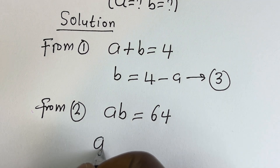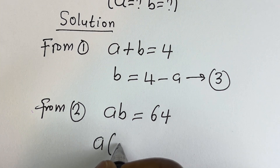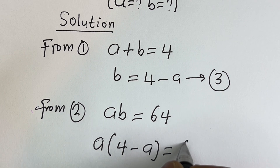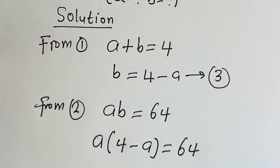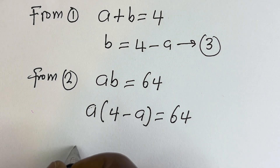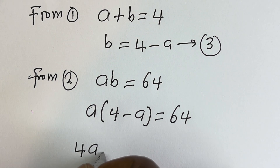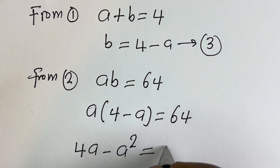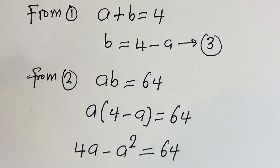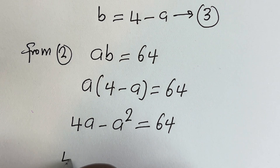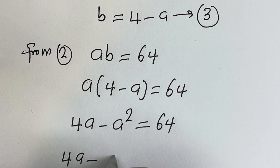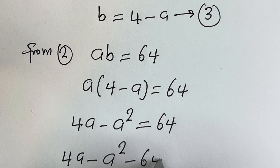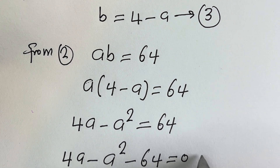So a times (4 minus a) is equal to 64. Let's open the brackets: we have 4a minus a squared is equal to 64. This gives us 4a minus a squared minus 64 is equal to 0.